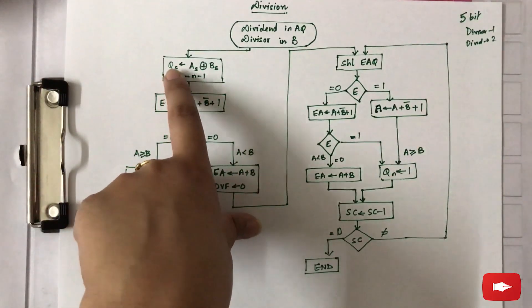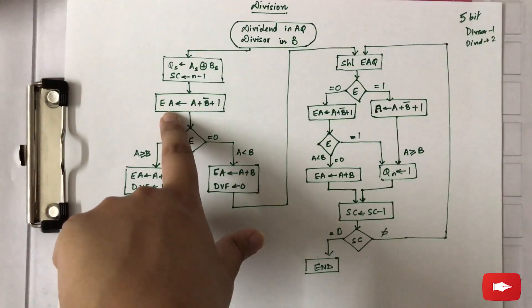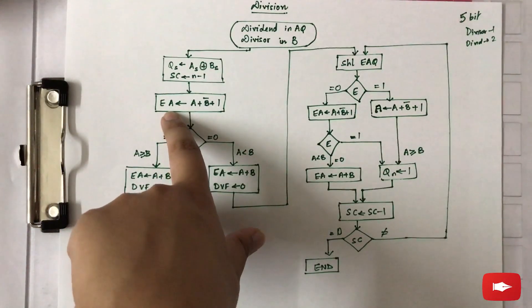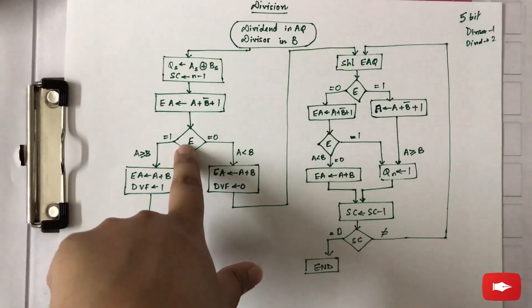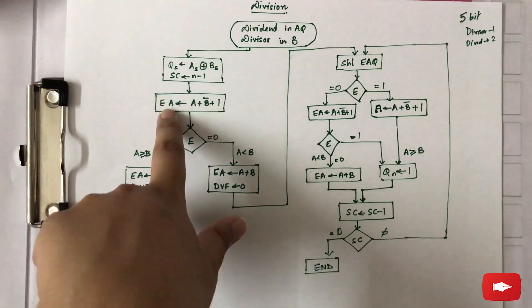Now to compare the first bits of the dividend and divisor, we perform the subtraction here. If it is overflow, then the E value should be one, because the result is getting stored in EA where E stores the overflow value.